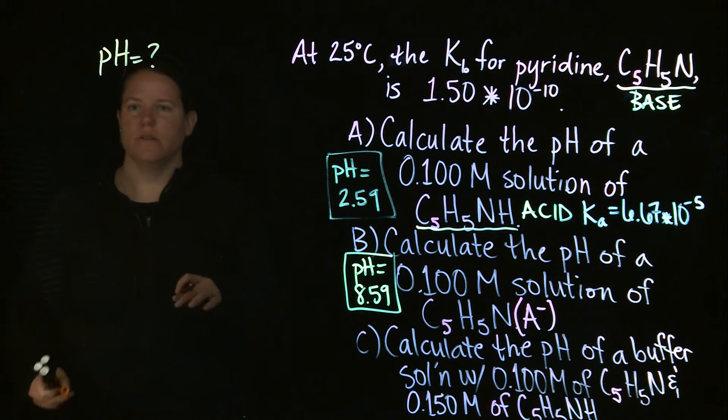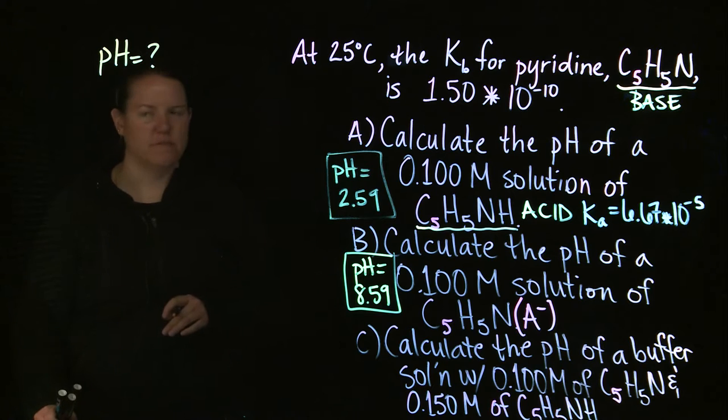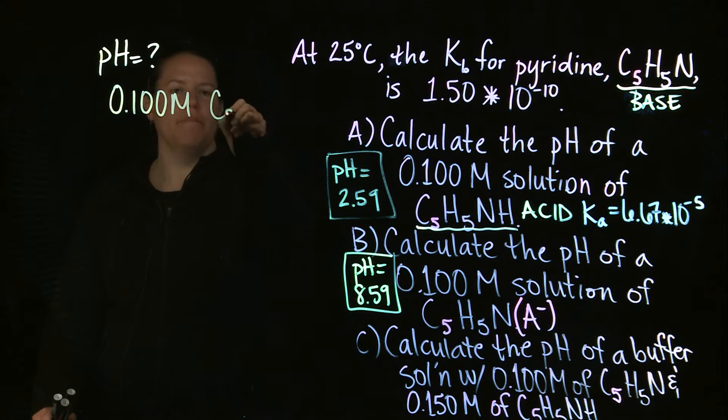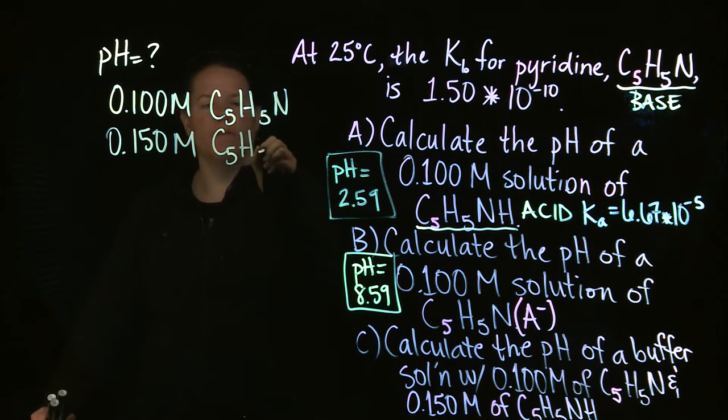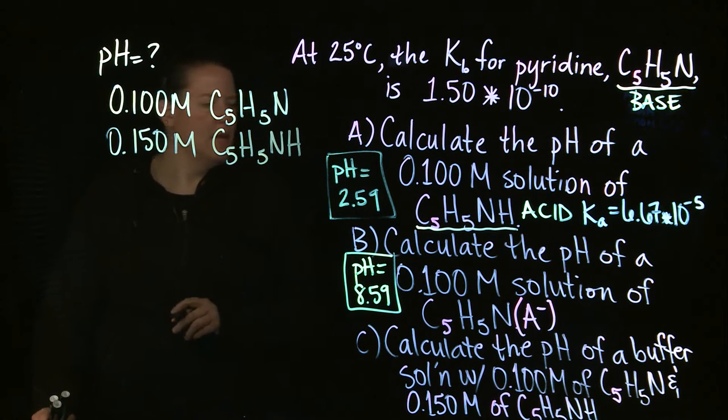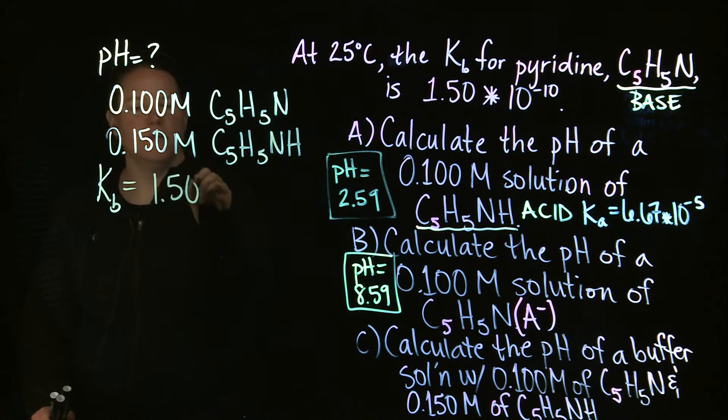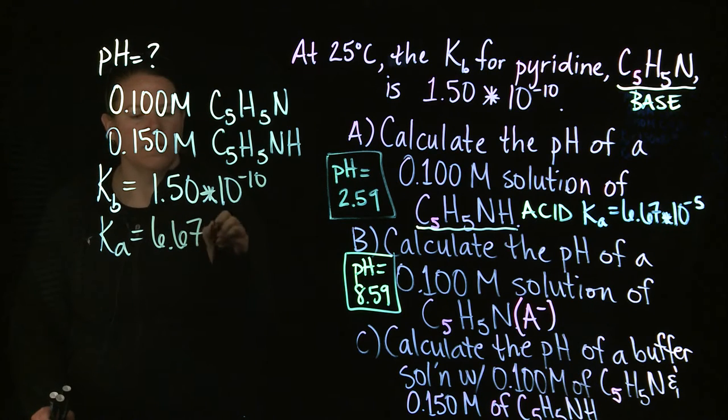This could be called random variations on pH calculations, like a series of poems or music or something. I like it. Alright, so what are we doing? We got 0.1 molar of pyridine and we got 0.15 molar of its protonated form, which is the acid. And we also know that the Kb of pyridine is equal to 1.5 times 10 to the negative 10th, and Ka is equal to 6.67 times 10 to the negative 5th.